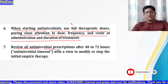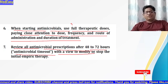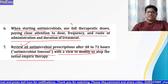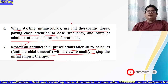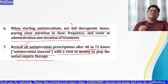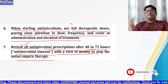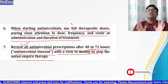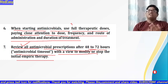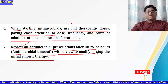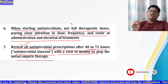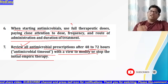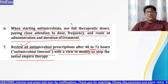Principle seven: review all antimicrobial prescriptions at 48 to 72 hours — the antimicrobial timeout — with a view to modify or stop the initial empirical therapy. Check whether the patient is getting better or worse on the current prescription. If the patient is deteriorating after 48 to 72 hours, go back, recheck the diagnosis, doses, and antibiotic prescription, as it may not be appropriate. If the patient is deteriorating very fast, evaluate earlier — even at 6 to 12 hours.